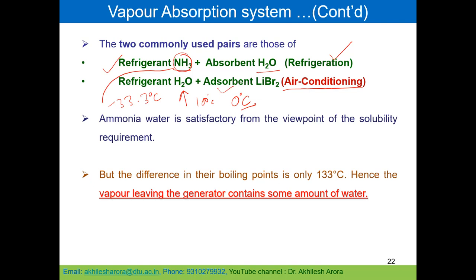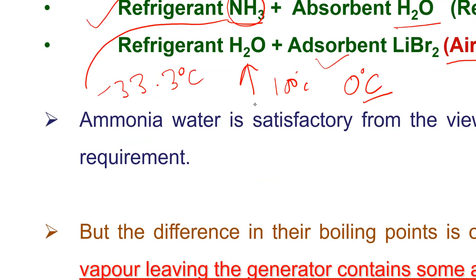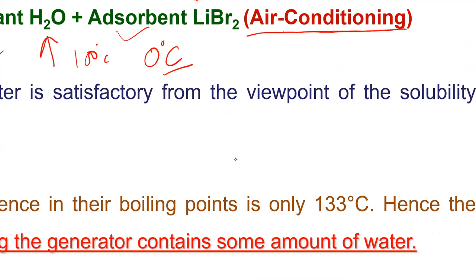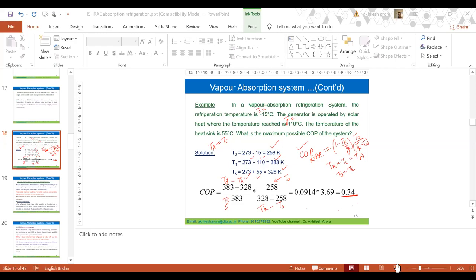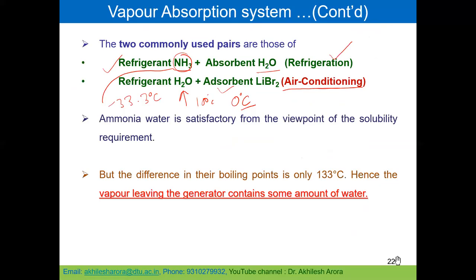Ammonia-water is satisfactory from the viewpoint of the solubility requirement because ammonia is highly soluble in water. However, the difference in their normal boiling points is only 133°C — ammonia at minus 33.3°C and water at 100°C — which is less than the required 200°C.